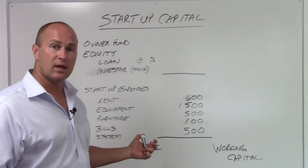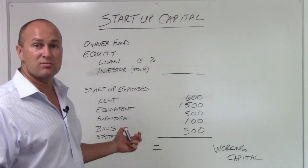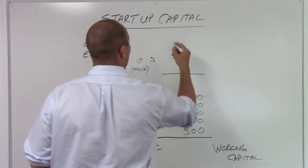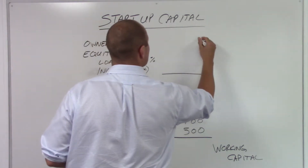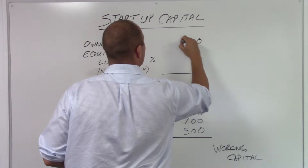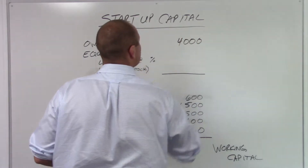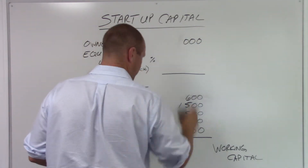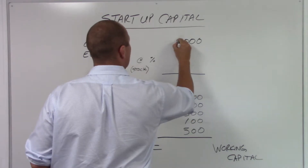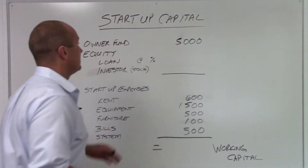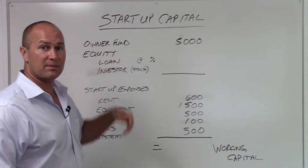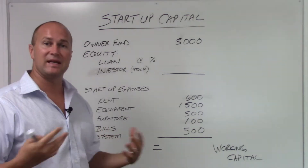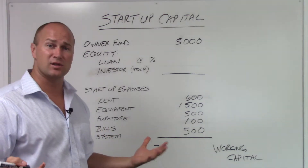Option one: I can use my own money. Say for instance I use $5,000 of my own money for my startup capital investment. That's the simplest and easiest thing to do.